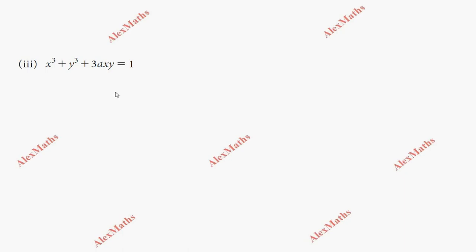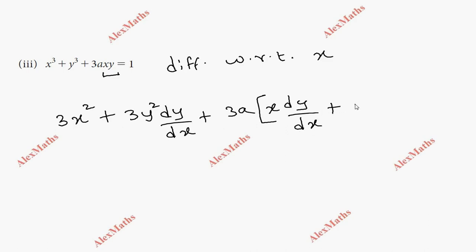Third subdivision. This is differentiating with respect to x. Now x cubed is 3x squared, y cubed is 3y squared. But y with respect to x differentiate, dy/dx. Plus 3a constant. x and y, uv method follow. So x into second term's differentiation plus y into first term x differentiation 1, equal to 1, the differentiation is 0.